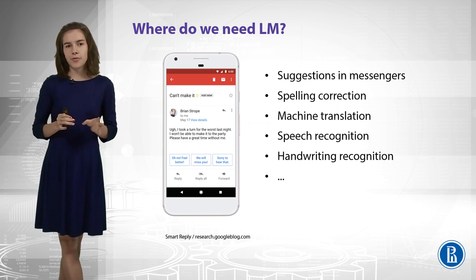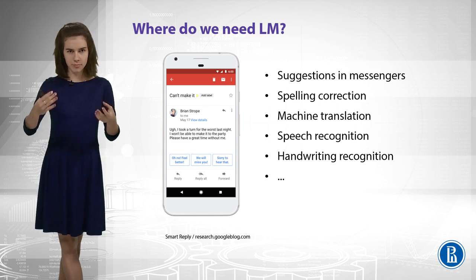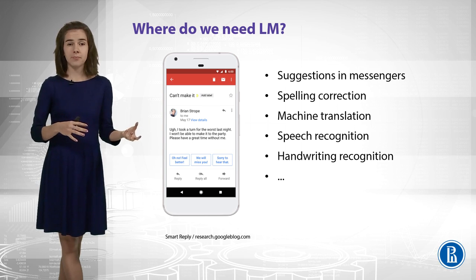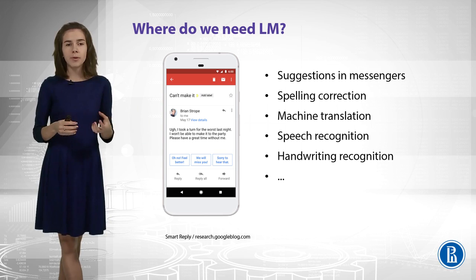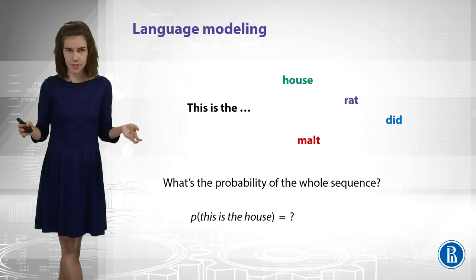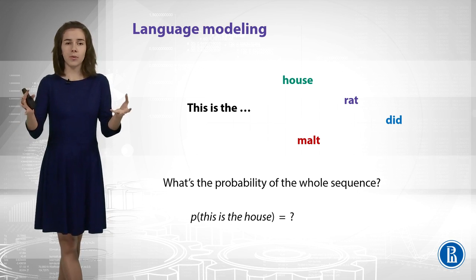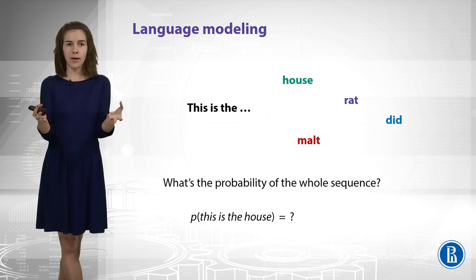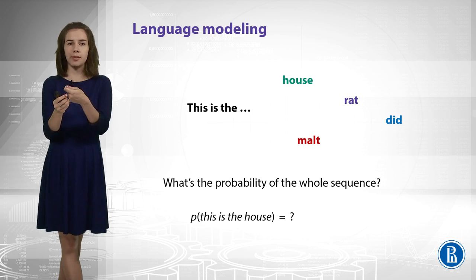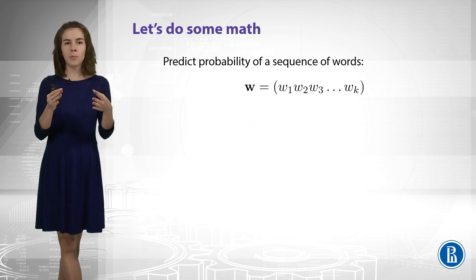So, also there are some other applications, like machine translation or speech recognition. In all of these applications you try to generate some text from some other data. It means that you want to evaluate probabilities of text, probabilities of long sequences. Like here. Can we evaluate the probability of 'this is the house?' Or the probability of a long sequence of 100 words? Well, it can be complicated, because maybe the whole sequence never occurs in the data. So, we can count something, but we need somehow to deal with small pieces of this sequence, right? So, let's do some math to understand how to deal with small pieces of this sequence.